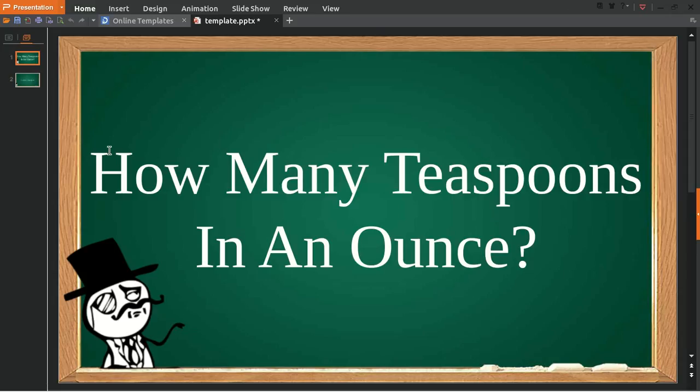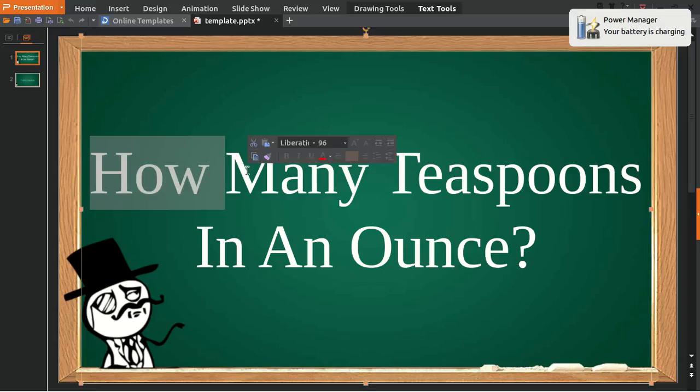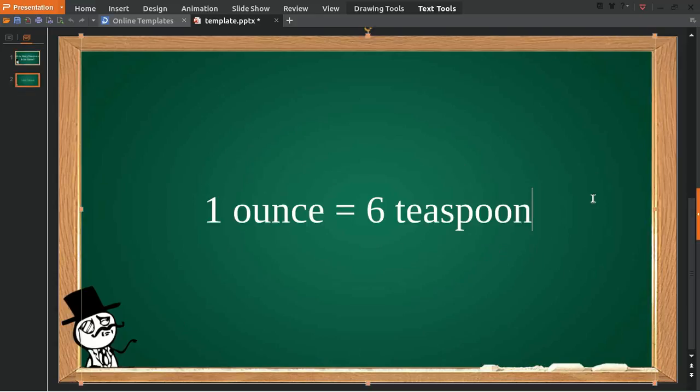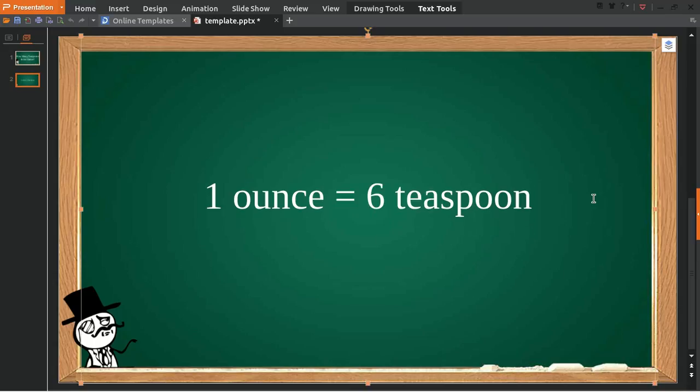Hello, how are you everyone? In today's video we are going to answer a question about how many teaspoons in an ounce. Okay, let's count for it. One ounce is equal to six teaspoons.